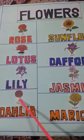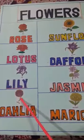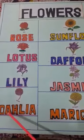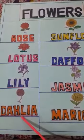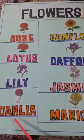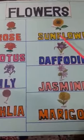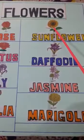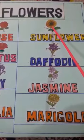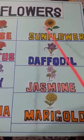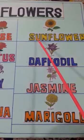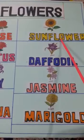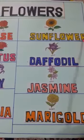Next is Dahlia. Dahlia has many colors. All of you read the spelling. D-A-H-L-I-A. Dahlia. Can you tell me which flower turns its face towards the sun? It is sunflower. Read the spelling. S-U-N-F-L-O-W-E-R.